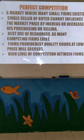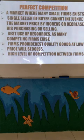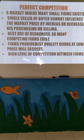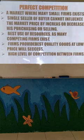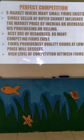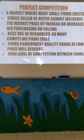This is what we are going to discuss today. First, perfect competition. Perfect competition is a market situation where many small firms exist. A large number of small firms will prevail or exist in perfect competition — that is one of the most important features of this type of market form. Next, a single seller or buyer cannot influence the market price by increasing or decreasing his purchasing or selling. Firms that provide the best quality goods at a low price will succeed. How much quality goods can be provided at a cheap price is one of the criteria to assess the success of the firms in perfect competition.